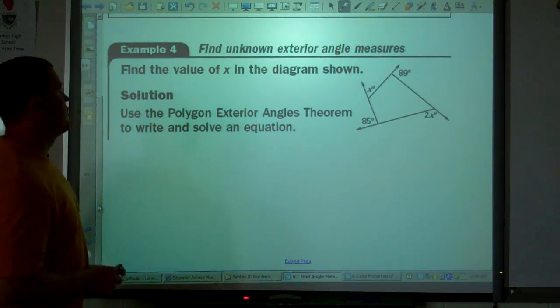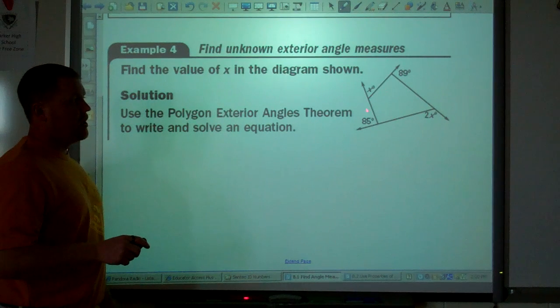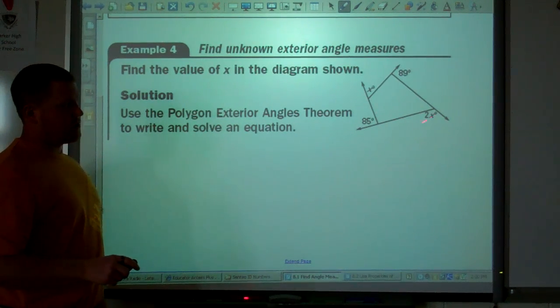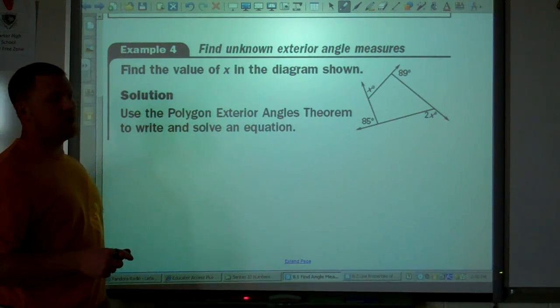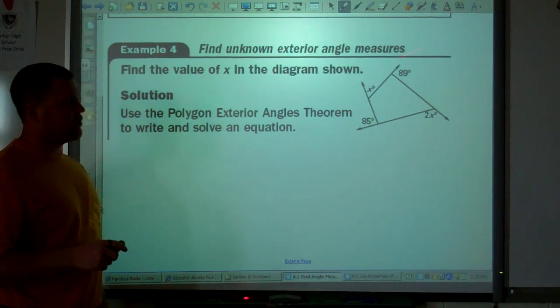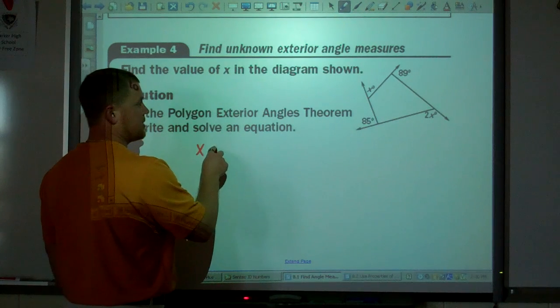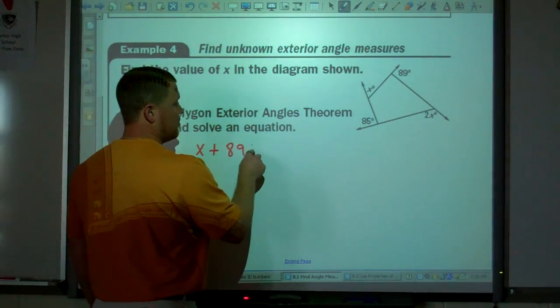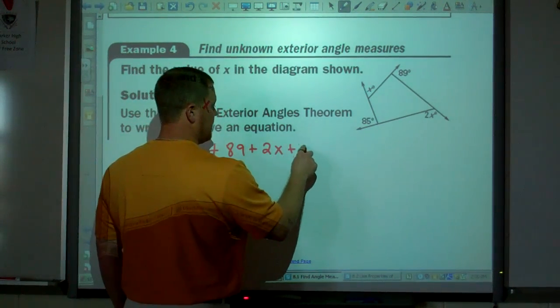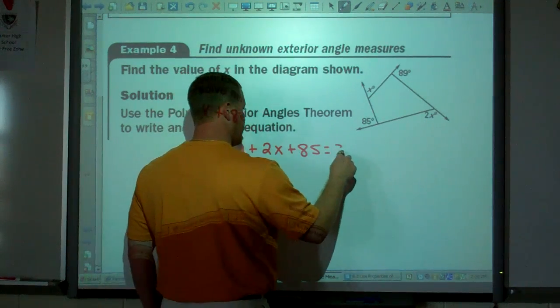So here, find the value of x in the diagram shown. We're talking about exterior angles. I don't even care what kind of polygon it is. We're talking about exterior angles. They add up to equal 360 degrees. So x plus 89 plus 2x plus 85 equals 360.